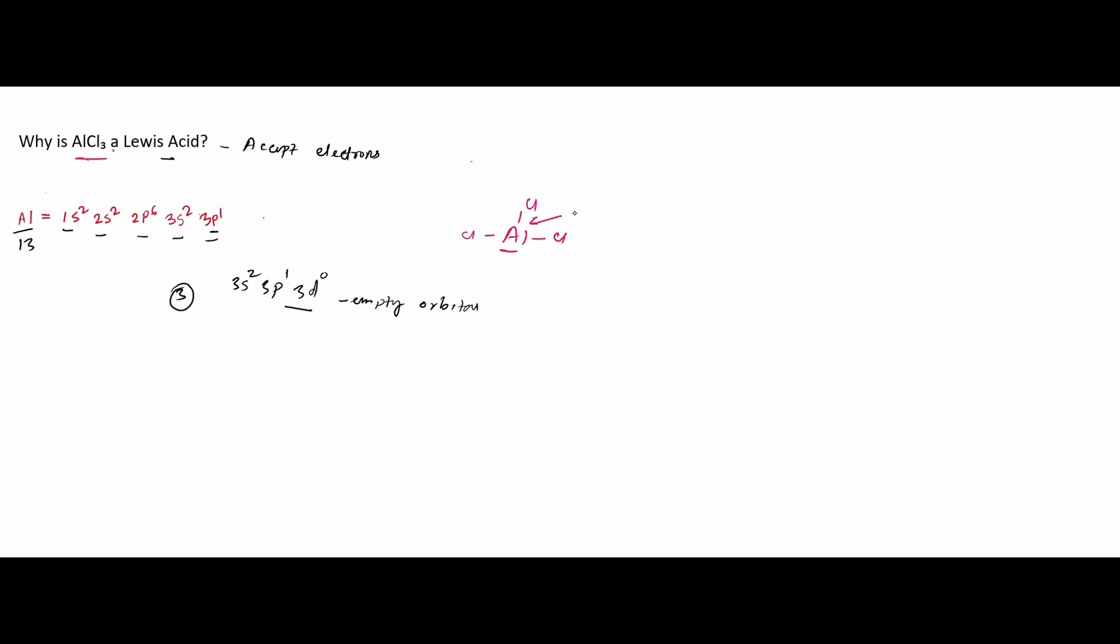It can accept electrons. And when compounds can accept electrons, it's called a Lewis acid. That is why aluminum chloride is a Lewis acid. Thank you guys for watching the video, I'll see you next time.